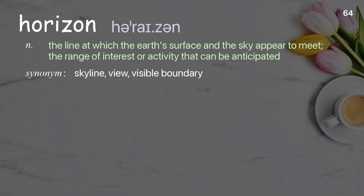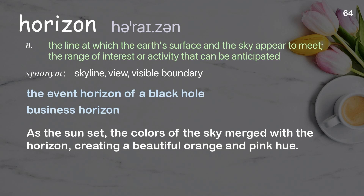Horizon: the line at which the Earth's surface and the sky appear to meet; the range of interest or activity that can be anticipated. Examples: the event horizon of a black hole, business horizon. As the sun set, the colors of the sky merged with the horizon, creating a beautiful orange and pink hue.